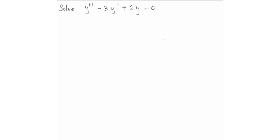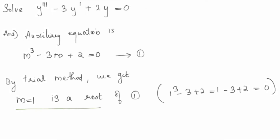The auxiliary equation is m³ - 3m + 2 equals 0. We are going to look at the roots. This is a third-order equation.